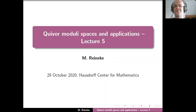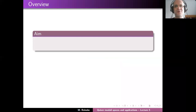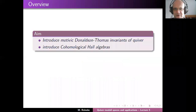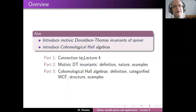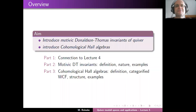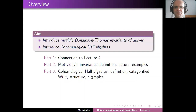Welcome back. For this final lecture overview, we have two aims: one is to introduce motivic Donaldson-Thomas invariants of quivers, and the other is to introduce cohomological Hall algebras. The plan is: first, three slides connecting today's content to yesterday's lecture; second, motivic DT invariants — their definition, nature, and examples; and third, cohomological Hall algebras as a categorification, including a categorified wall-crossing formula.